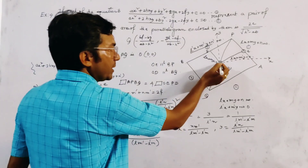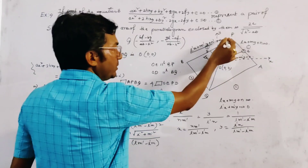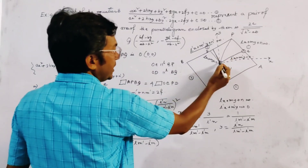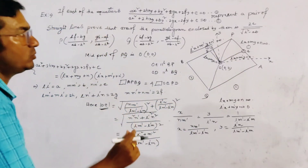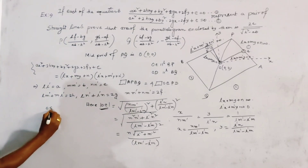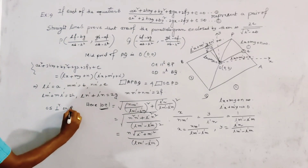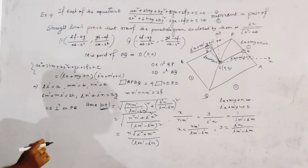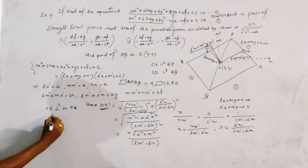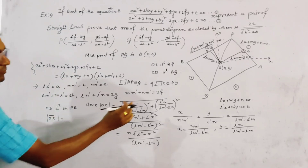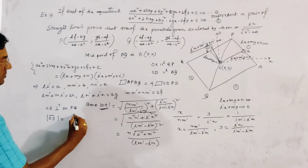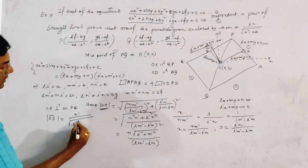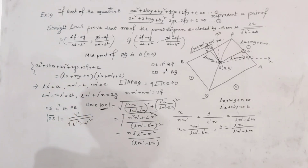Now we find the perpendicular distance from O to line PB. Let this perpendicular be OS. Since O is the origin, the perpendicular distance OS from the origin to the line l'x + m'y + n' = 0 is given by OS = n' / √(l'² + m'²).